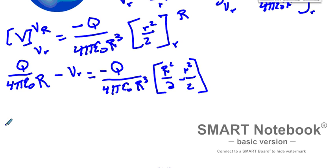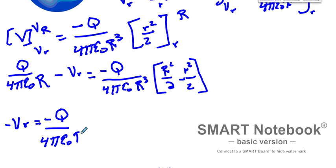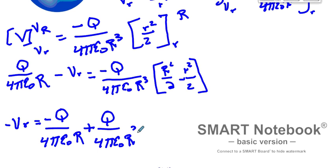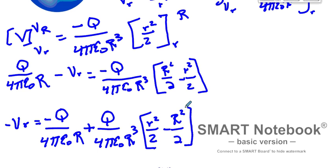So I have negative V sub r equals. I'm going to take the q over 4 pi epsilon naught R term to the other side, giving negative q over 4 pi epsilon naught R, and then make this a plus. I'm going to factor the negative through on this term, giving plus q over 4 pi epsilon naught R cubed, and I'll have little r squared divided by 2 minus big R squared divided by 2. Now I'm going to pause the video and do all the mathematics to come up with the final expression.